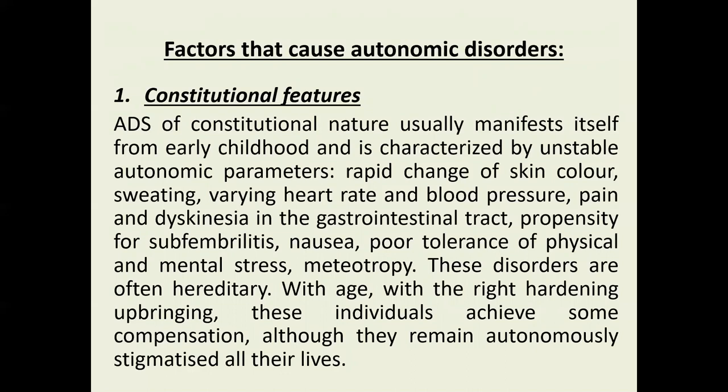Unstable autonomic parameters include rapid changes in skin color, sweating, varying heart rate and blood pressure, pain, and dyskinesia in the gastrointestinal tract, as well as a propensity for subfebrilitis and poor tolerance of physical and mental stress, and meteorological sensitivity. These disorders are often hereditary. With age, with proper conditioning and upbringing, these individuals can achieve some compensation, although they remain autonomically stigmatized throughout their lives.